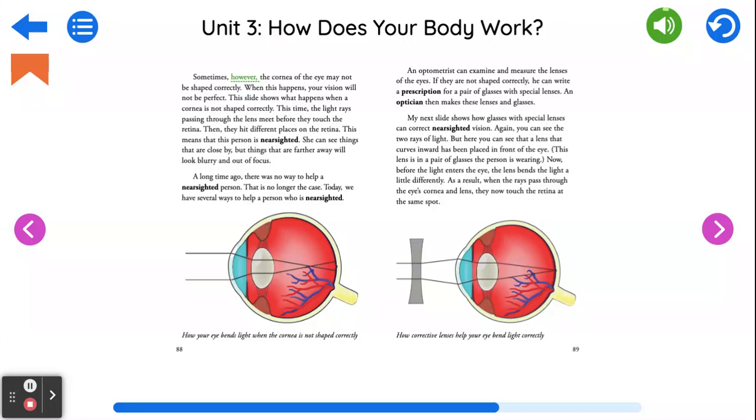Sometimes, however, the cornea of the eye may not be shaped correctly. When this happens, your vision will not be perfect. This slide shows what happens when a cornea is not shaped correctly. This time, the light rays passing through the lens meet before they touch the retina. Then, they hit different places on the retina.